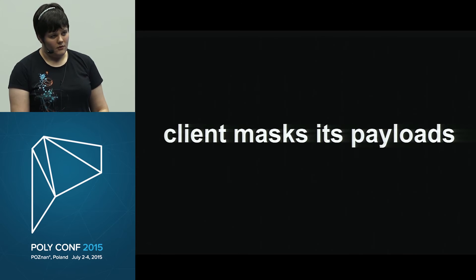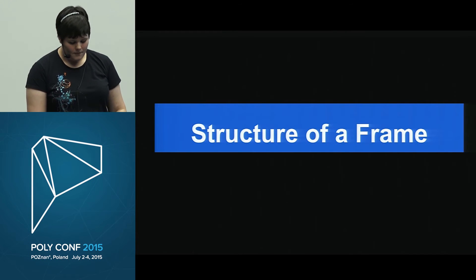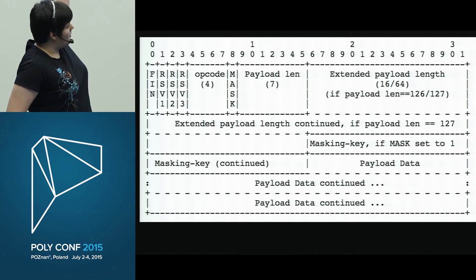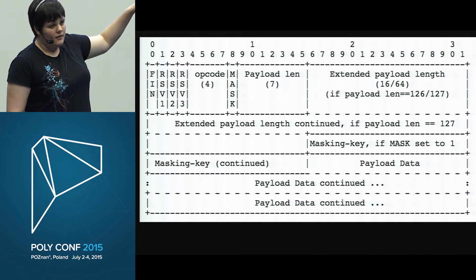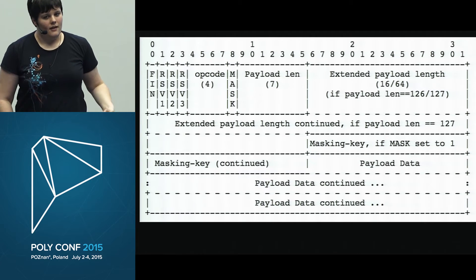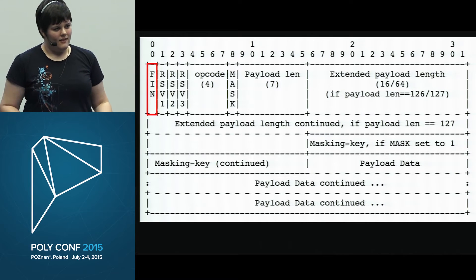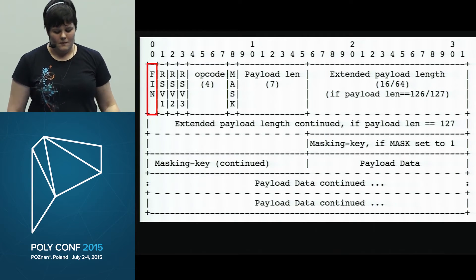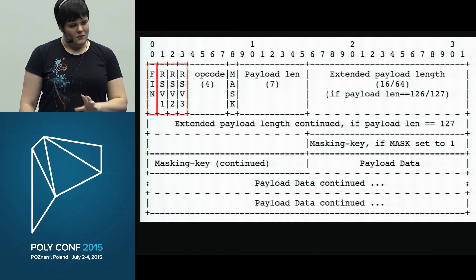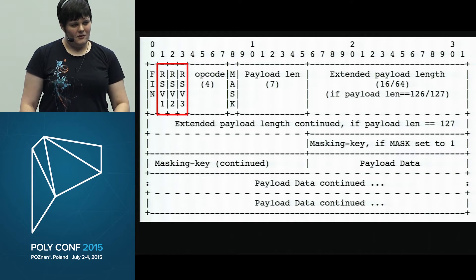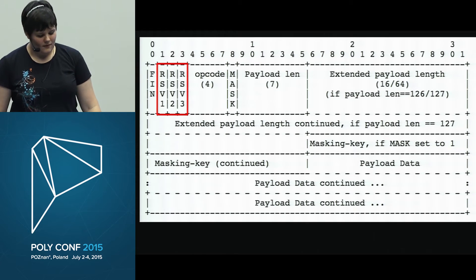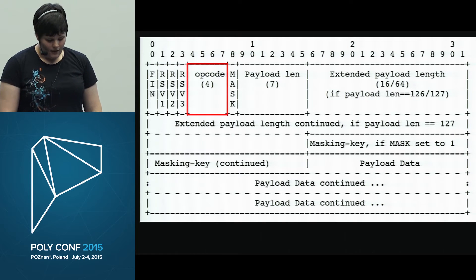Let's look at how a frame is actually structured. A frame is basically headers plus a payload. This is the ASCII diagram from the RFC — each column is one bit and it's 32 bits wide, read left to right, top to bottom. The very first bit is called FIN — if it's one, this is the last frame in a message; if it's zero, there are more frames. Then we have three reserved bits, which are always zero since they're reserved for future use and must be zero to prevent misuse.